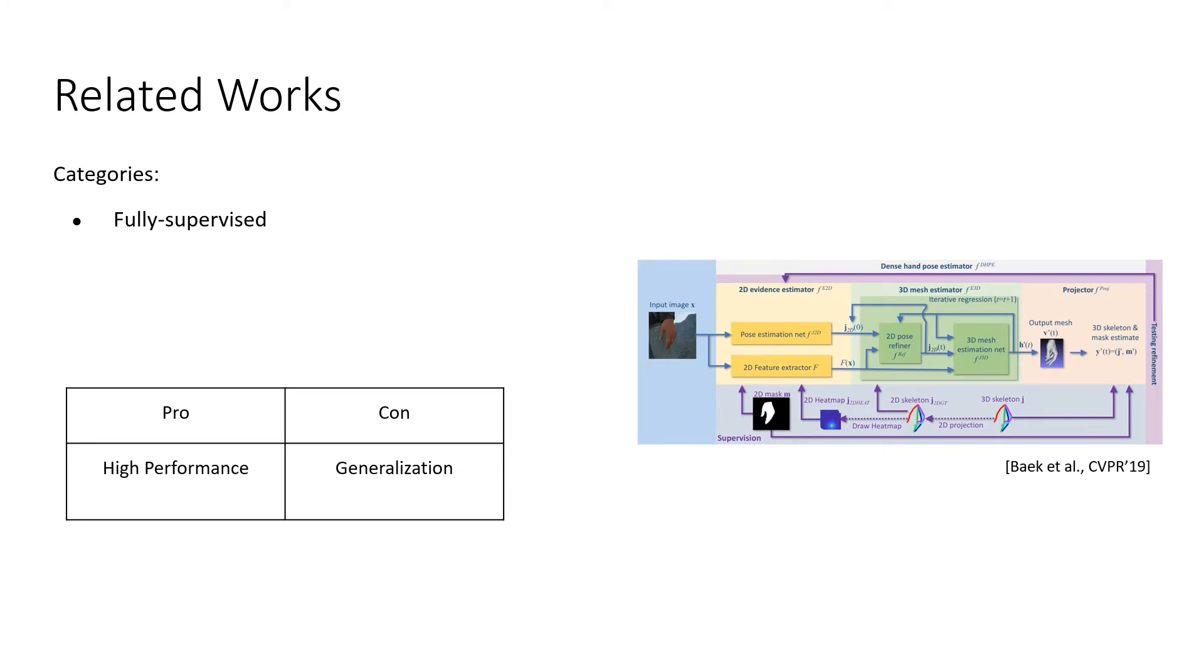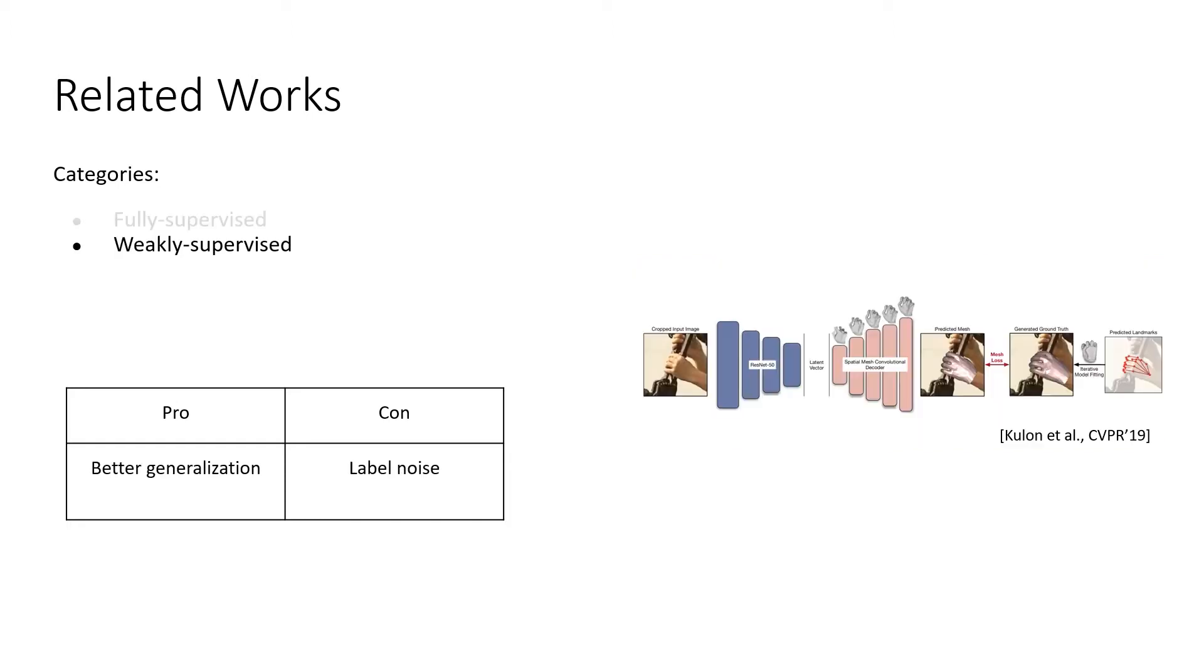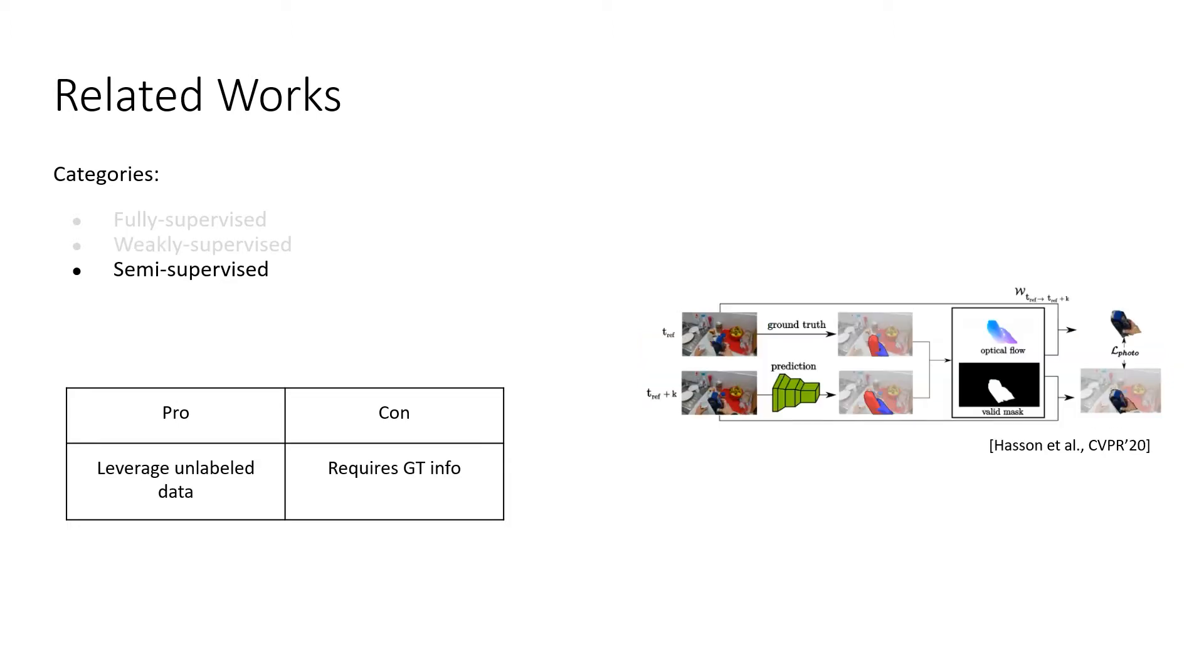These works can be categorized based on the type of data annotation they investigate. We have the fully supervised methods which make use of full 3D annotation. Such methods lead to high performance on target datasets but do not generalize well to in-the-wild imagery. Weakly supervised methods make use of additional weaker annotations such as 2D or noisy labels. Such methods can generalize better to in-the-wild settings but are bounded by the performance of the automatic or human annotator.